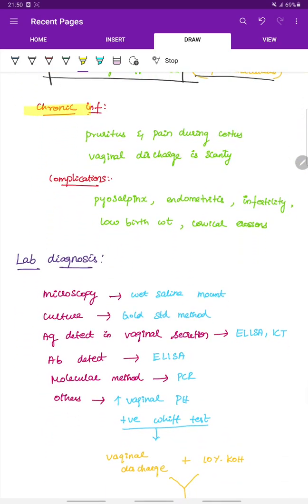In case of chronic infection, there is pruritus, itching and pain during coitus. And the vaginal discharge is scanty.